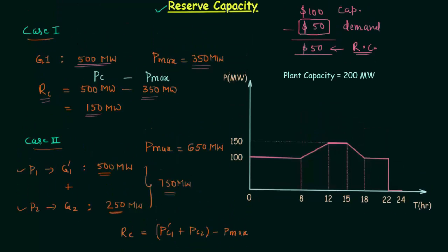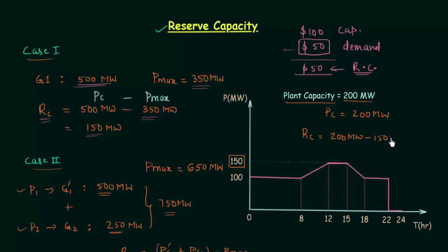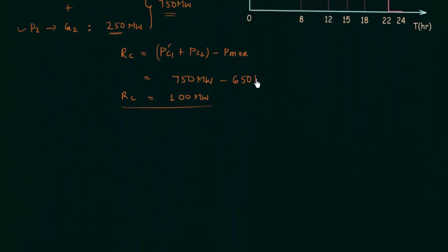Now let us find out reserve capacity using a load curve. In this load curve the plant capacity is given as 200 MW, so PC = 200 MW, and you can see the maximum load is 150 MW. So reserve capacity is 200 MW minus 150 MW, which gives 50 MW as the reserve capacity. The next part of this lecture is very important, where we will find out reserve capacity in terms of Pmax, PLF, and PCF — maximum power, plant load factor, and plant capacity factor.